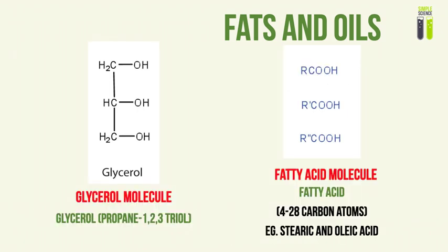Let's look at the two reactants again. We have an alcohol reactant and a carboxylic acid reactant. The alcohol reactant is known as glycerol — its actual name is propane-1,2,3-triol. Why propane? Because it has three carbon atoms. And triol because it has three alcohol groups, each connected to a carbon atom separately. The fatty acid molecule generally consists of a huge number of carbon atoms — around 4 to 28. Examples include stearic acid or oleic acid.